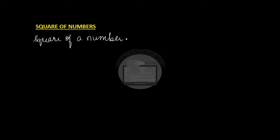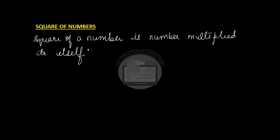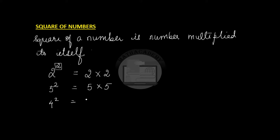Square of a number is a number multiplied to itself. So if we say what is square of 2, it is 2 to the power of 2 — this represents the square. So 2 to the power of 2 is 2 multiplied to 2. Similarly, 5 to the power 2 is 5 multiplied to 5, multiplied to itself 2 times. 4 squared is 4 times 4, and we can write x squared as x times x.